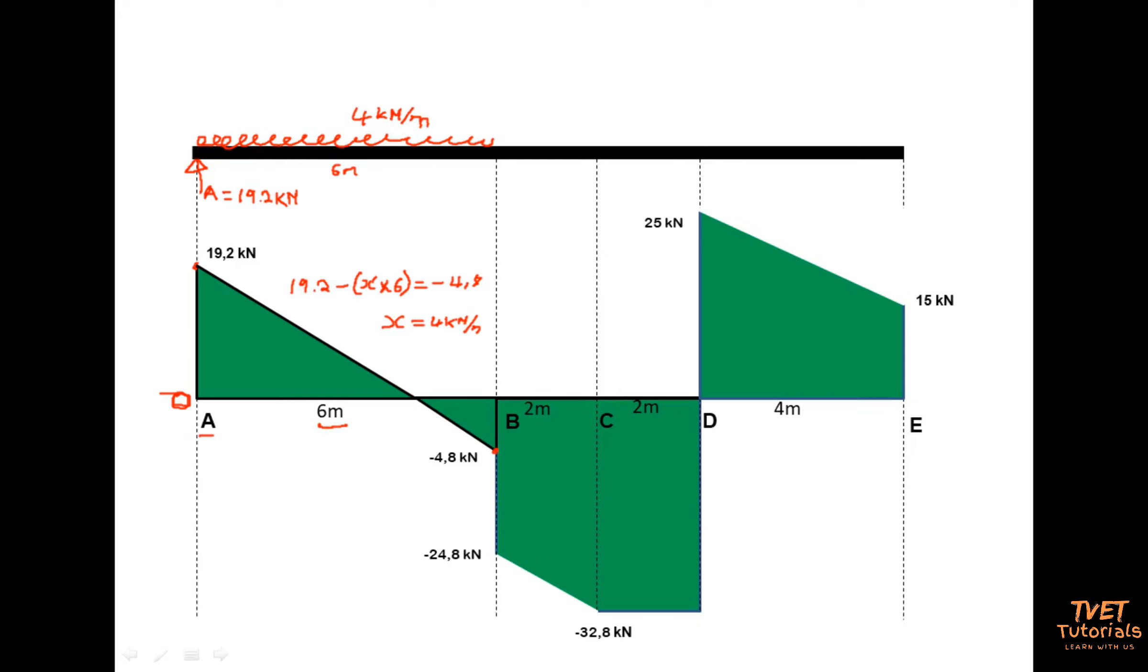When you add them 19.2 plus 4.8 you get 24. Then 24 you divide by the length between A and B which is 6. So 24 divided by 6 gives you 4. Then that is your scale.